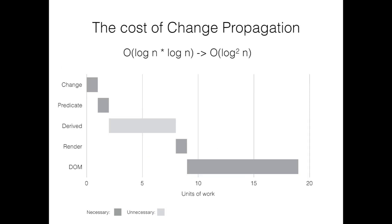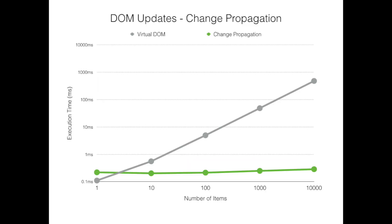Change propagation is a logarithmic squared algorithm. Inserting a node into the derived tree takes logarithmic steps, but at each step of the insertion, a logarithmic index lookup needs to be performed. While logarithmic squared isn't as fast as logarithmic, it's far faster than linear algorithms running on even modest datasets.